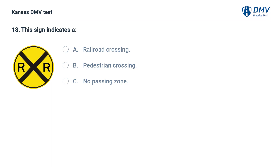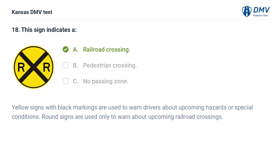This sign indicates a: A. Railroad crossing. B. Pedestrian crossing. C. No passing zone. The answer is A. Railroad crossing. Yellow signs with black markings are used to warn drivers about upcoming hazards or special conditions. Round signs are used only to warn about upcoming railroad crossings.